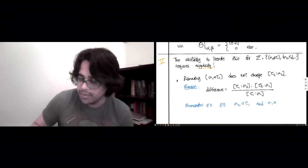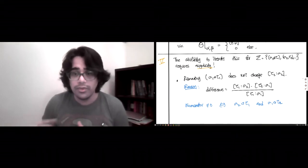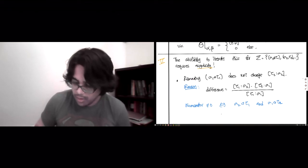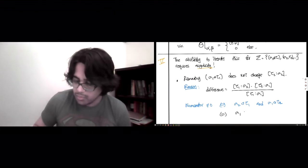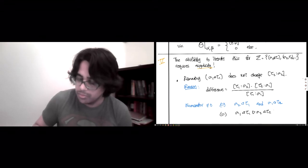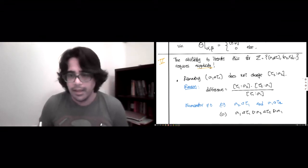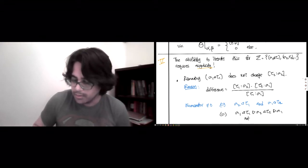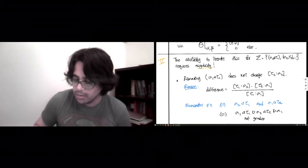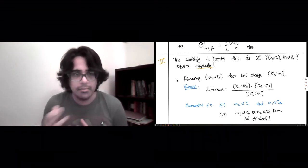is not equal to 0 if and only if sigma 2 is a face of tau 1 of codimension 1 and sigma 1 is a face of tau 2 of codimension 1. But if both of these things were true, then you would get sigma 1 less than tau 1 bigger than sigma 2 less than tau 2 bigger than sigma 1. And this would be not gradient.